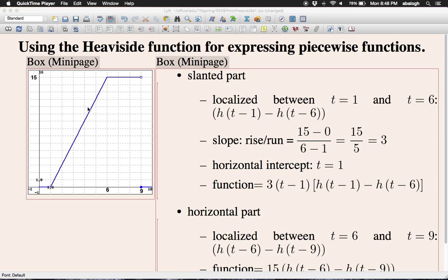This slanted part has a slope which is different from 1. We calculate the slope using the formula rise over run. The rise is the vertical difference: it goes between 0 and 15. The run is the horizontal distance: it goes from 1 to 6, so the distance is 6 - 1 = 5. Therefore, the slope is 15/5 = 3.